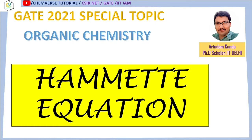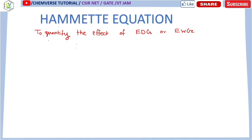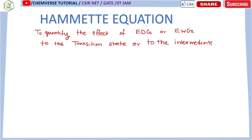Let's begin with the basic principle of the Hammett equation. First, we need to know the utility of this equation. It is basically used to quantify the effect of electron donating groups or electron withdrawing groups on the transition state or on the intermediate. That is what we are going to discuss in this video.